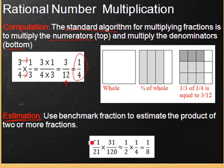I know that if I want to find the product of 11 twenty-firsts times 31 one-hundred-twentieths I know 11 over 21 that's about half because 11 over 22 is half. 31 one-hundred-twentieth is about 30 over 120 or one-fourth. Therefore we can come up with an estimate to 11 over 21 times 31 divided by 120 as one-half times one-fourth which gives us one-eighth.